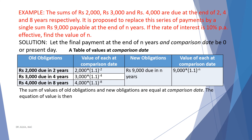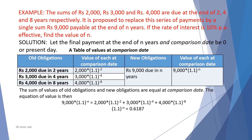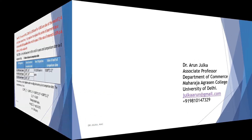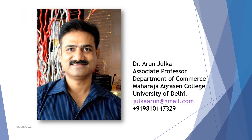The sum of values of old obligation and new obligations are equal at comparison date. The equation of value is: 9,000 multiplied by 1.1 raised to the power minus n equals 2,000 multiplied by 1.1 raised to the power minus 2, plus 3,000 multiplied by 1.1 raised to the power minus 4, plus 4,000 multiplied by 1.1 raised to the power minus 8. After solving we get 1.1 raised to the power minus n equal to 0.6187. Taking log of both sides: minus n times log 1.1 equals log 0.6187. After using a simple calculator we get the value of n equals 5.04 years.